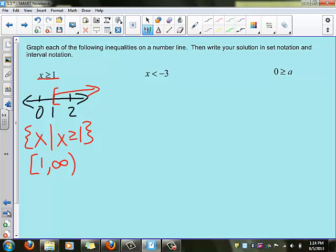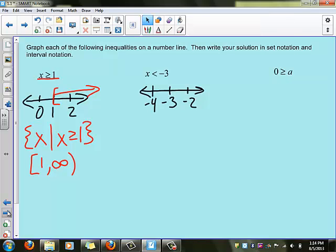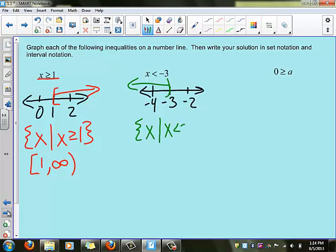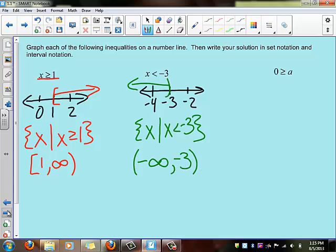On this second one, once again we start with our number line. This time we want all the values that are less than negative 3, so we'll use a parenthesis because it's not equal to. Set notation, once again we want x, such that x is less than negative 3, so any value of x as long as it's less than negative 3. Interval notation, we're coming all the way down to negative 3, but only going up to negative 3.